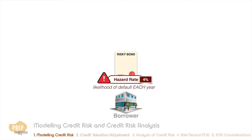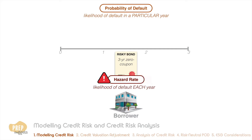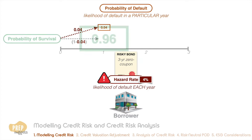It is important that you understand the difference between hazard rate and the probability of default. The probability of default is the likelihood of a default in a particular year. So if the issue is a three-year zero coupon bond and the hazard rate is four percent each year, the probability of default in the first year would be four percent.